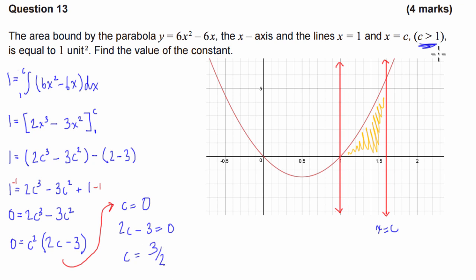And that falls within our condition. So, we can see that for this integral, for the value of the area bound by these four parameters, x-axis, x equals c, x equals 1, and y equals 6x squared minus 6x, for that area to be equal to 1, the value of c has to be equal to 3 over 2, or 1 and a half. So, there it is, that's the answer.